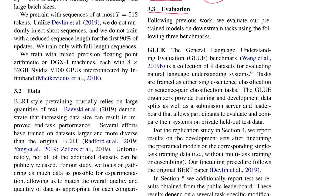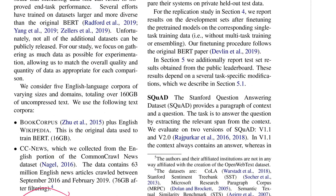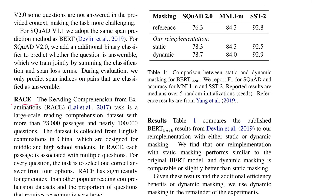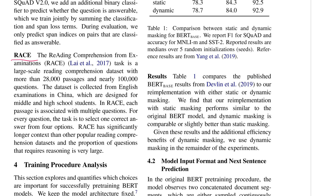Evaluation happens on several downstream tasks. The idea is you first pre-train the BERT model with masked language modeling, then evaluate on the GLUE benchmark — a collection of nine tasks — as well as SQuAD, a question answering task, and RACE. These are downstream NLP tasks. The paper isn't about these tasks specifically; they're just a way to measure how well your pre-training worked when you fine-tune on them.